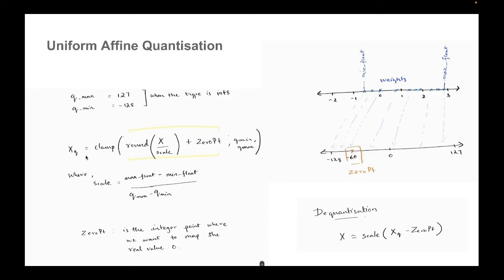And similarly, if you want to dequantize it back to the floating point value, you can use the same formula, which is like the inverse of what we are doing here. We have the quantized xq. We subtract the zero point and then multiply it with the scale to get the floating point value. So this is how uniform affine quantization works.